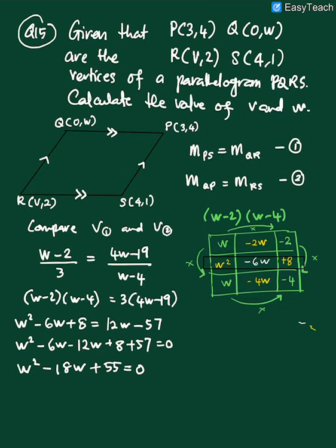Okay, and then when we have W square minus 18W plus 55 here, we do the factorization. We get the answer for W minus 13 and W minus 5. So the answer is W equals 13 and W equals 5. So we take this answer. This is omit because if you can see that, it is not reasonable to take W equals to 13.